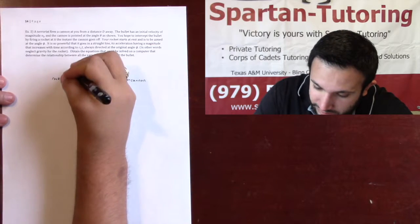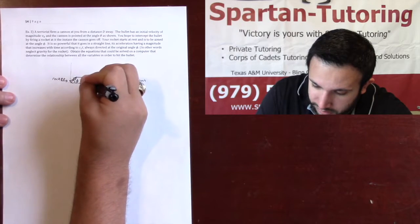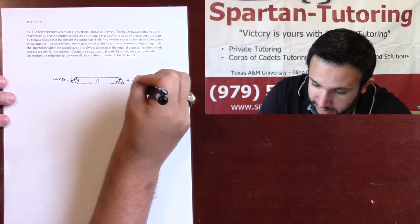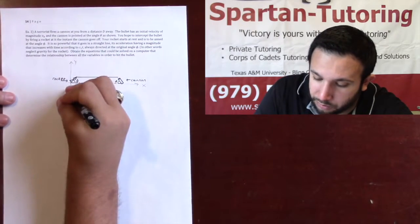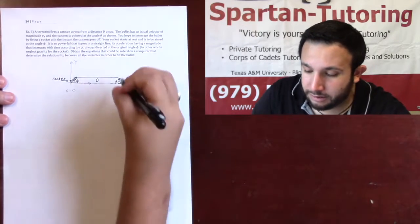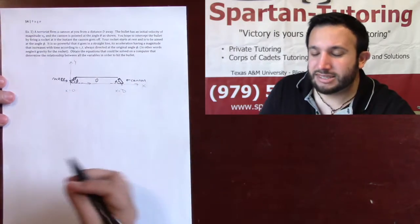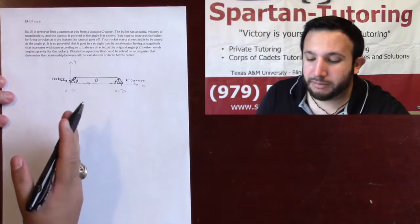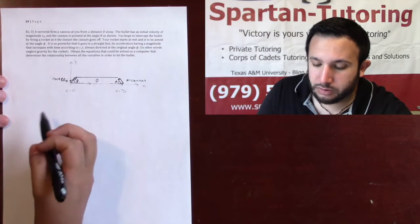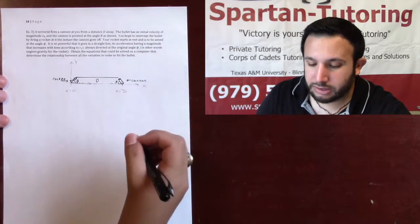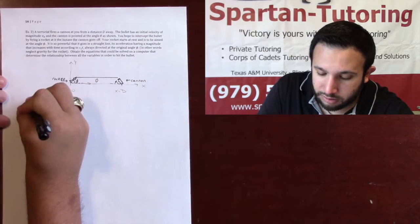I'm going to set the origin right here, with positive x going to the right and positive y going up. At this origin, x equals zero. The cannon, which fires the bullet, will be at x equals d because it's a distance d away. Now that the axis is set up, make sure your math reflects that. We need to find the x and y components for the rocket, x and y components for the bullet, then set the x's equal to each other and the y's equal to each other.